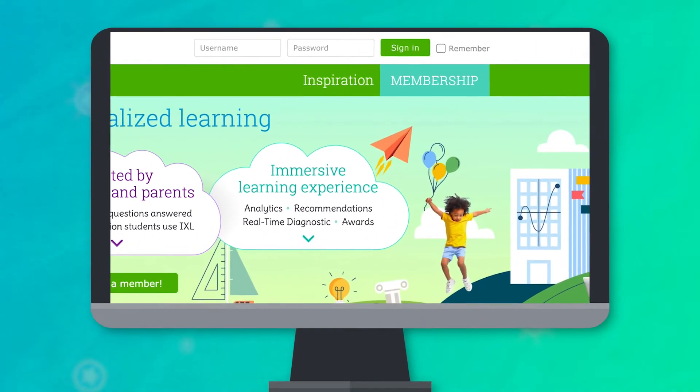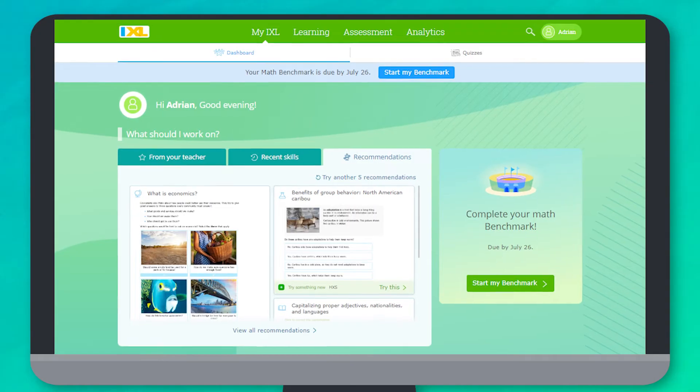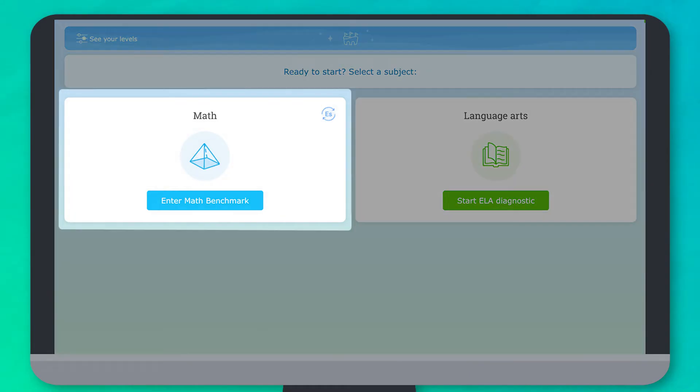Alright, now we can get started. First, sign into your IXL account and head to the Assessment tab. If you see a few different options, make sure you choose the Math section.